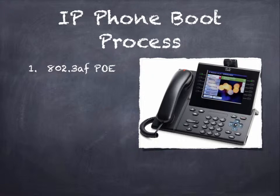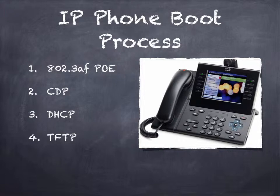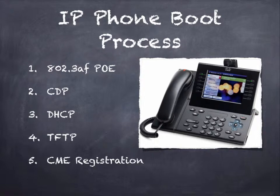The phone goes through several steps before it is fully registered and ready to make and receive calls. The first step is it needs power. This could be provided by a regular power brick plugged into the wall, but more likely it comes from Power over Ethernet — mainly the 802.3af standard. After the phone gets power, it does CDP, Cisco Discovery Protocol. This allows it to communicate to the switch it's connected to and discover what VLAN it's a member of — in this case, the voice VLAN.